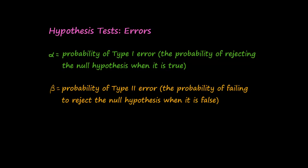Beta represents the probability of Type 2 error. This is the probability of failing to reject the null hypothesis when it was actually false.